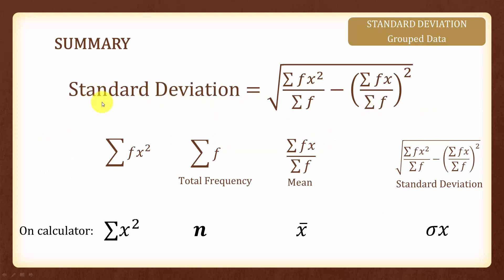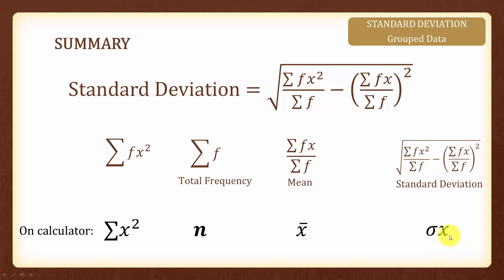In summary, the formula for finding standard deviation requires the summation of fx squared, the summation of f, and the mean. On the calculator, the symbol for summation of fx squared, the letter n for total frequency, and x-bar for the mean are used. We can also use the calculator to directly verify the standard deviation using the sigma x button. And that's all for this topic.